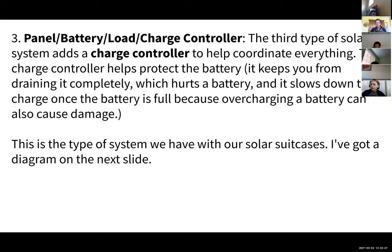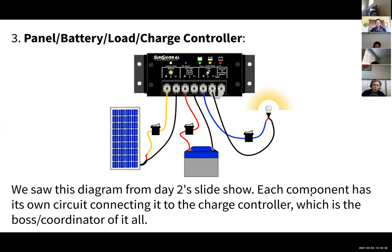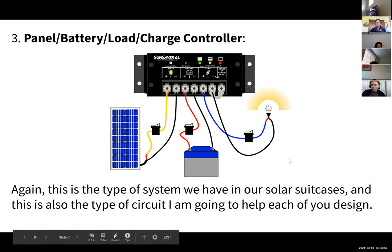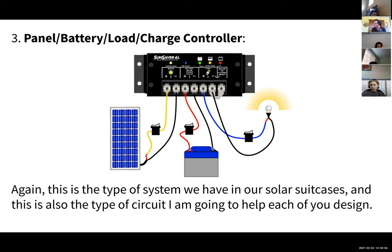This is the kind of system that our solar suitcase is. This is the diagram we had from day two — what our kits will have. There'll be a charge controller. On this diagram the solar panel has its own circuit connecting it to the charge controller, the battery has its own circuit, and the loads have their own circuit. So the charge controller is the boss — it coordinates everything. This is the kind of circuit we're going to have in the kits that you're going to design.